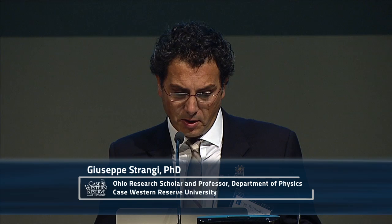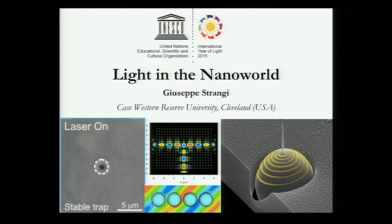It's truly a pleasure to be here and to talk to you about light in the nanoworld, which is part of my research program here at Case Western Reserve University. We are all aware that light is of great importance for humanity and for all forms of life. Through photosynthesis, for example, light generates life. We see because of light, but let me add that we understand because of light.